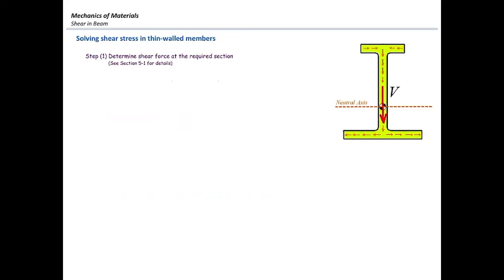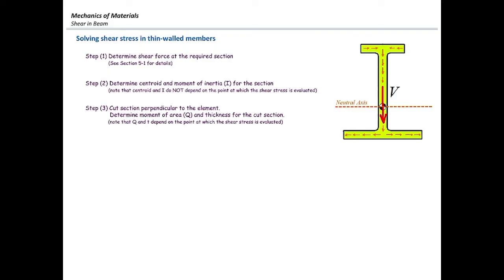The steps for determining shear stress in thin-walled elements: first, determine shear force V from shear and moment diagrams. Second, determine section properties including centroid Y-bar and moment of inertia I. Third — the tricky part — cut the section perpendicular to the thin-walled element at the point of interest, determine the area and Q, and determine the thickness T. Then calculate shear stress from VQ over IT.